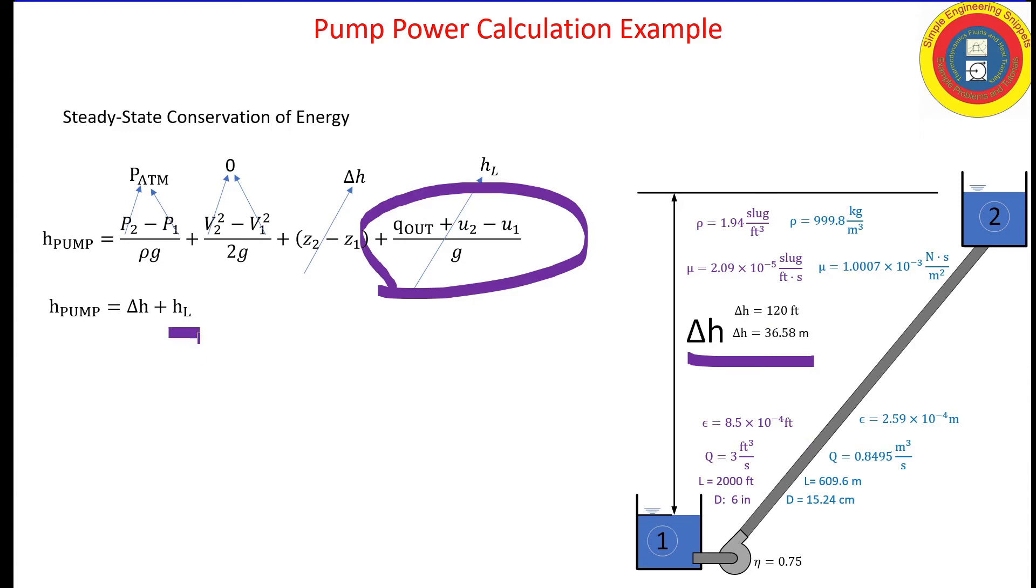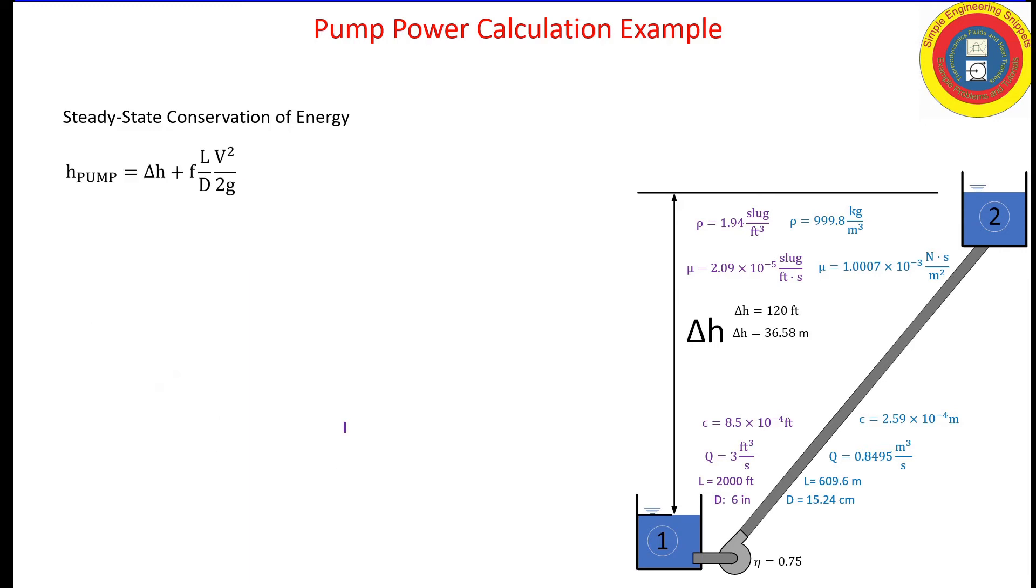What is head loss? We'll use the Darcy-Weisbach equation for head loss. The friction factor times length over diameter times velocity squared over 2g. We know the flow rate. We know the diameter. So all the terms are readily known except for the friction factor.